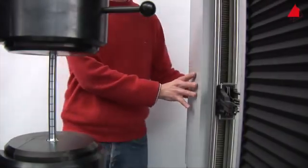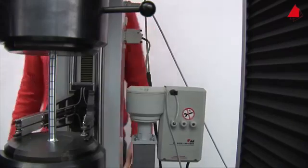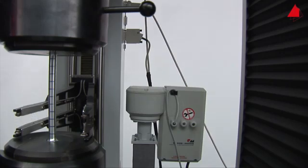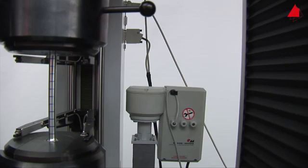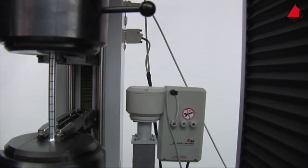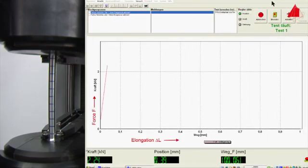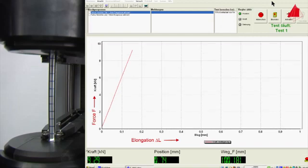After fitting the test piece into the testing machine and panning the extensometer into its working position, the test can start. The initial linear curve in the force-elongation diagram again shows the elastic behavior of the material.